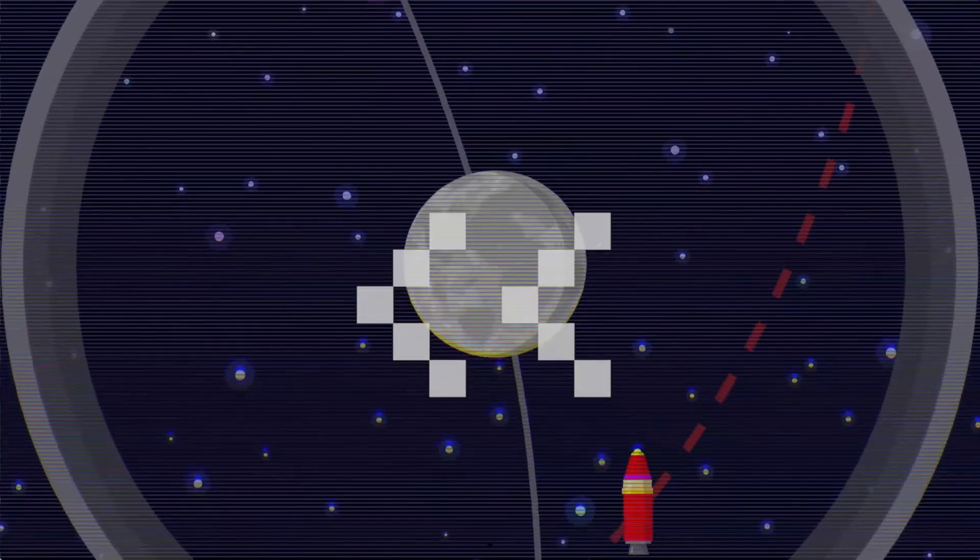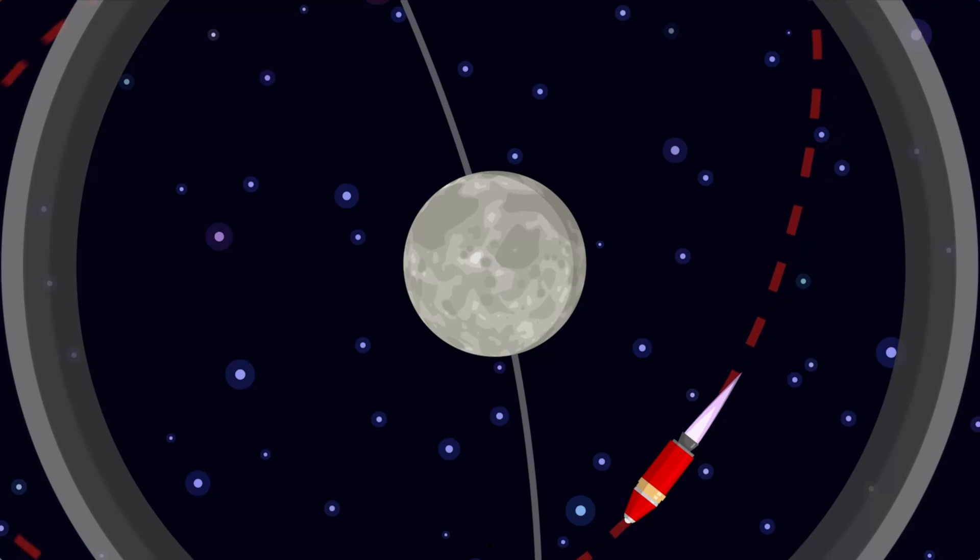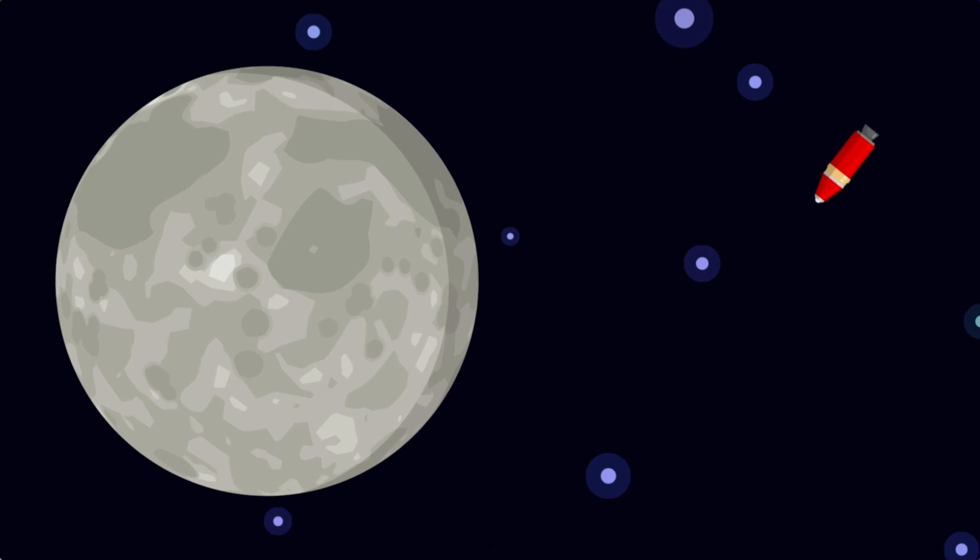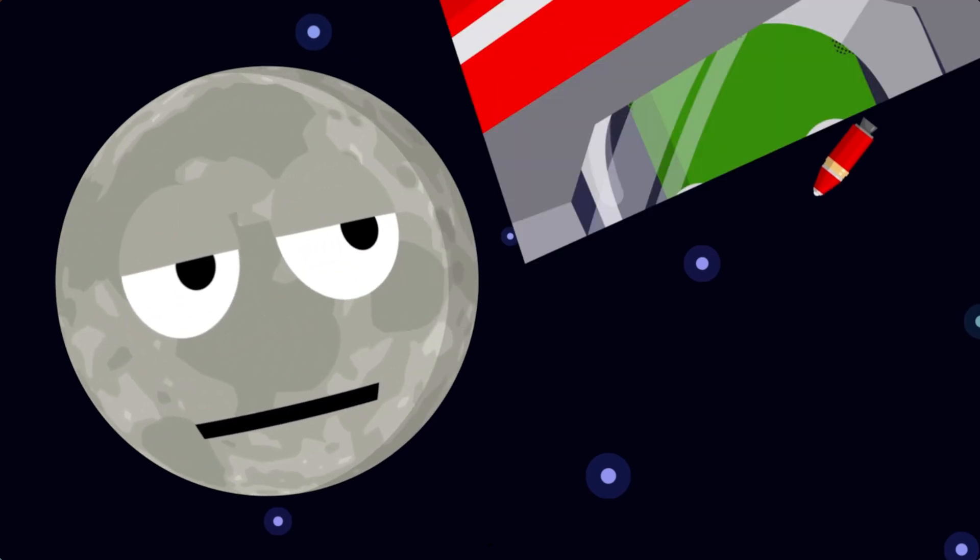Once you're in the MUN's gravity well, the best way to slow down is to fire your engines backwards until your trajectory becomes a nice, stable orbit. Now you're a moon of the MUN!